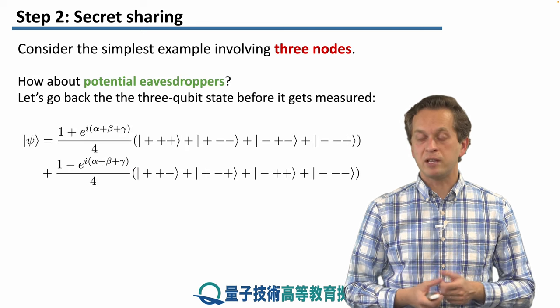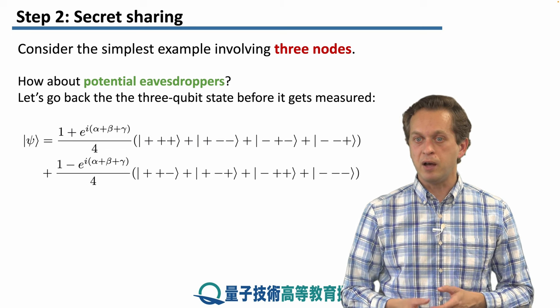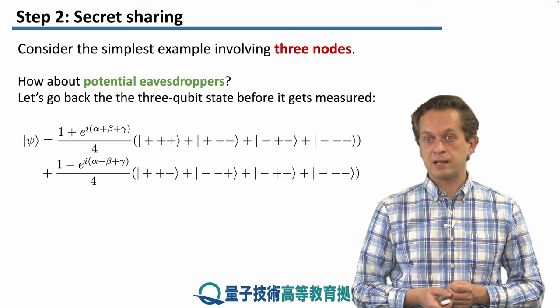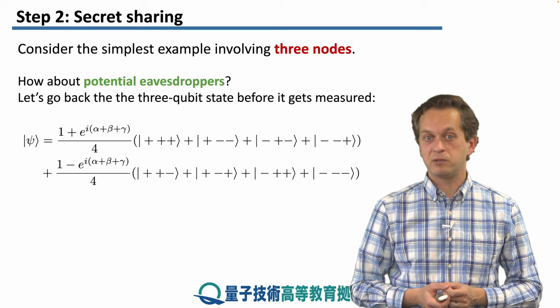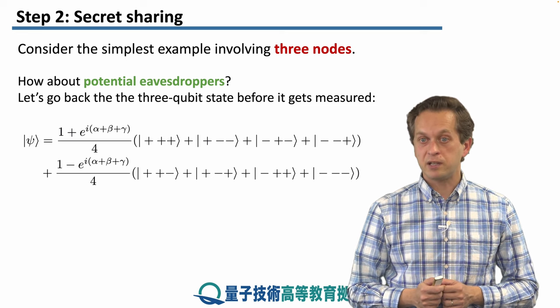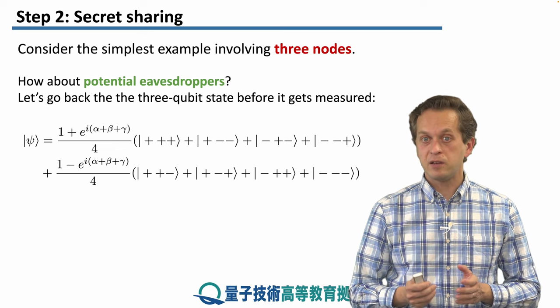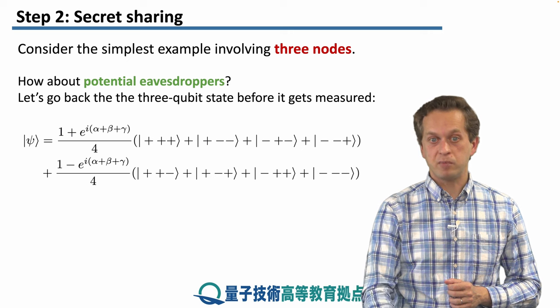How about any potential eavesdroppers? By revealing the phases α, β, γ, are we revealing anything about the classical bit, about the secret that a, b, c are trying to share? Let's go back to the three qubit GHZ state with the relative phase α, β, γ, and see what happens before we measure it.